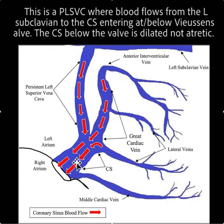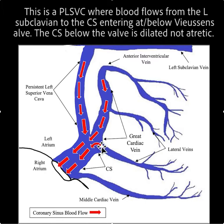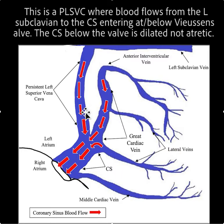Finally, as we mentioned before, this case is not a persistent left SVC. In persistent left SVC, the blood flow from the left subclavian enters the coronary sinus right at Vusen's valve, and thus the coronary sinus os is markedly dilated rather than atretic. The coronary sinus below Vusen's valve, where the persistent left SVC enters, is dilated — but importantly, the coronary sinus above Vusen's valve is normal size.